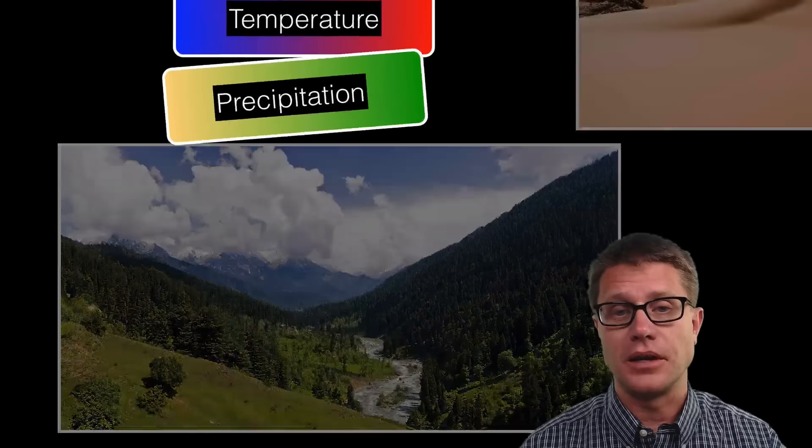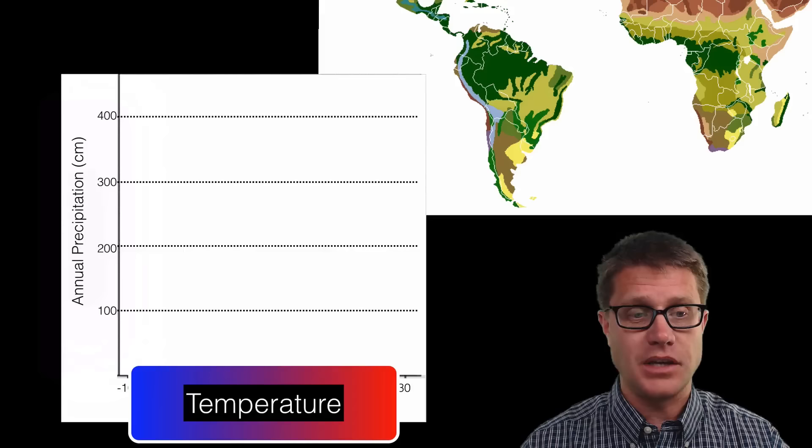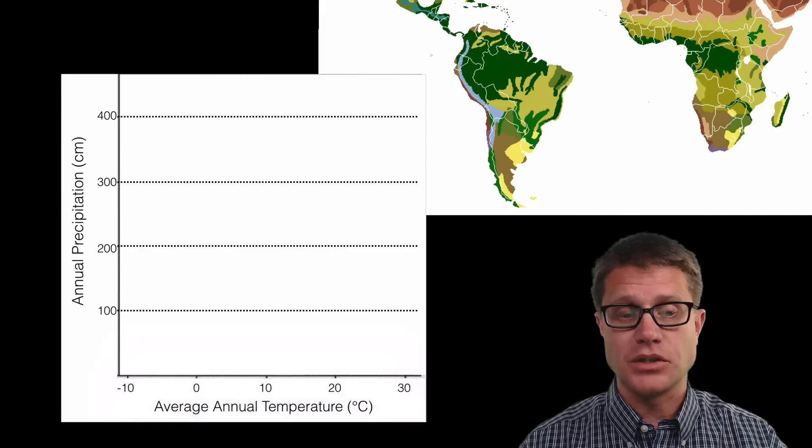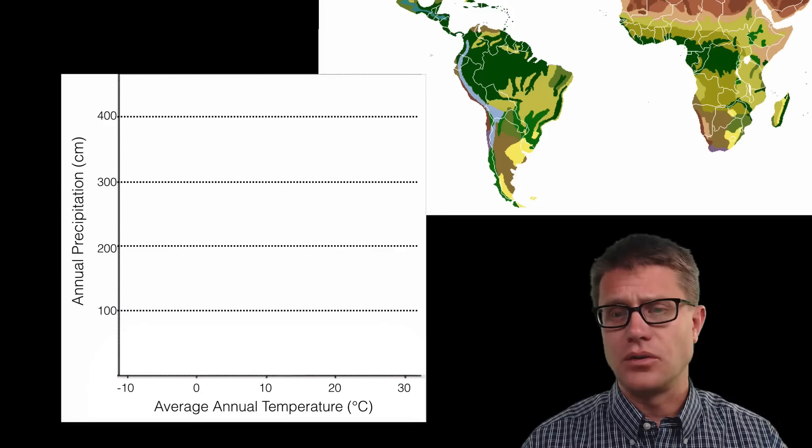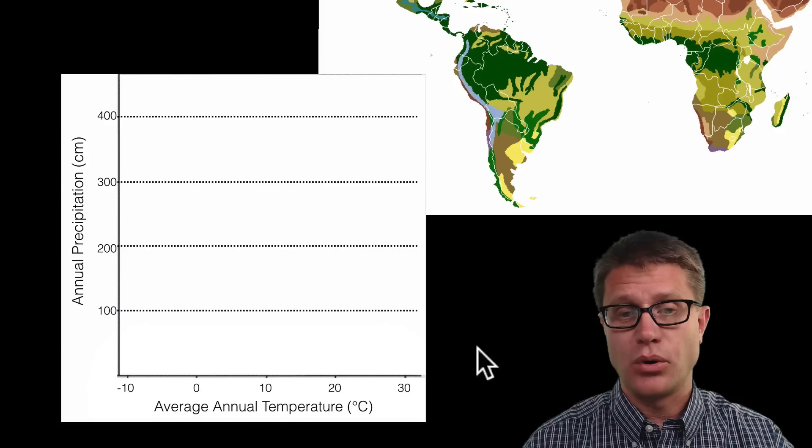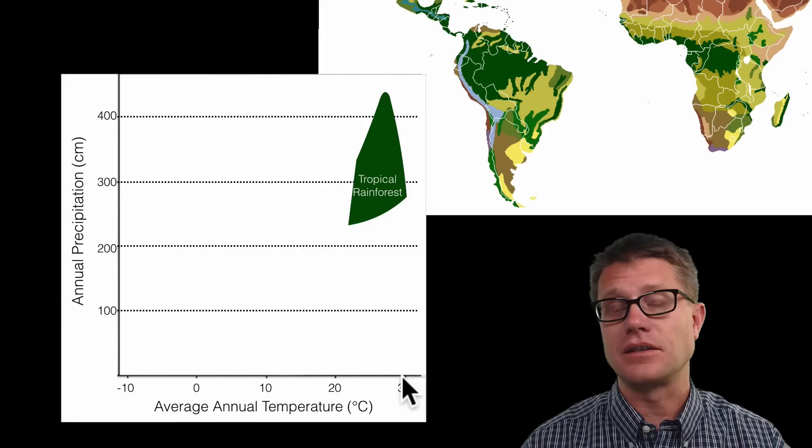If we graph those on a graph where we have precipitation on the Y, from 0 to 400 centimeters a year, and then we look at temperature from the very cold, negative 10 degrees Celsius as an average, up to 30 plus degrees Celsius, you could guess what biome we find where it is really hot and really moist. You could even point to it on our biome map. That is going to be the tropical rainforest. So you can read precipitation, temperature, that tells you the biome.